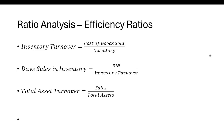Another measure of efficiency is what we call asset turnover. Here you take sales divided by total assets. What this does is give you an idea as to how well the company uses its assets to generate sales — for example, do they use the assets for things that will make the shopping experience better?